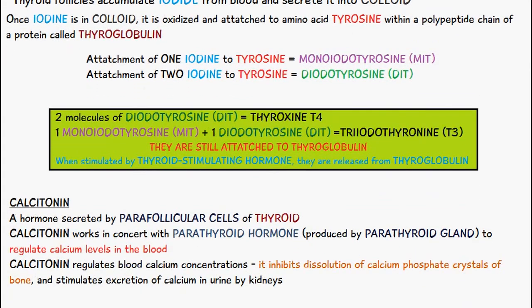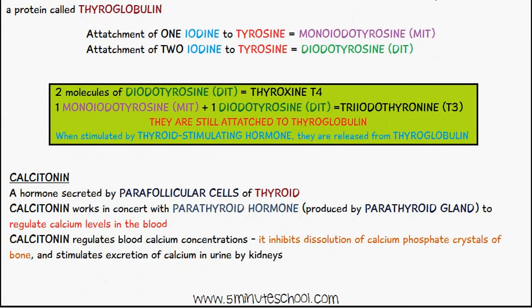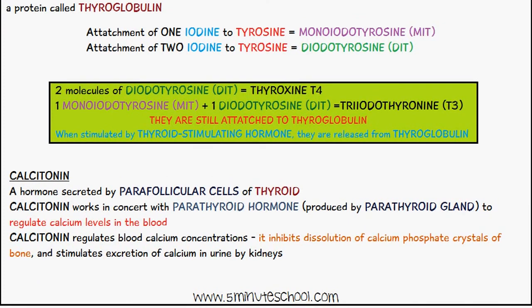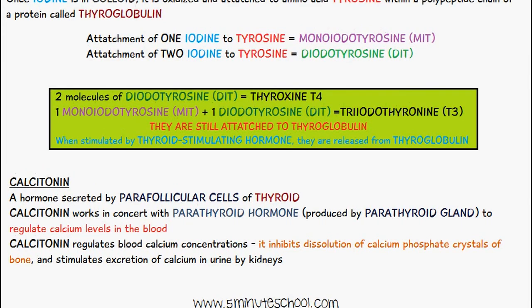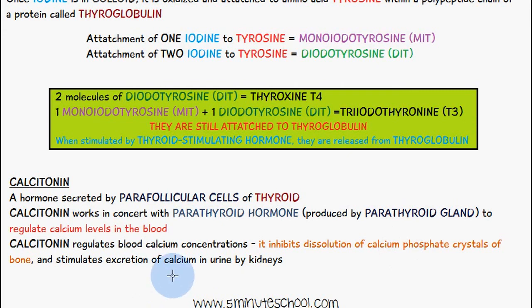Calcitonin is also a hormone secreted by the parafollicular cells of the thyroid. Calcitonin works in conjunction with parathyroid hormone, which is produced by the parathyroid gland, to regulate calcium levels in the blood. Calcitonin inhibits the dissolution of calcium phosphate crystals of the bone and stimulates the excretion of calcium in the urine by the kidneys.